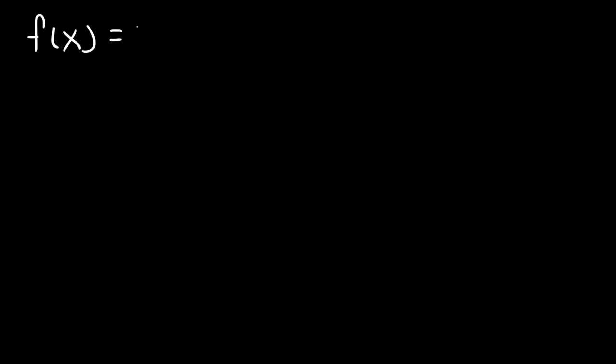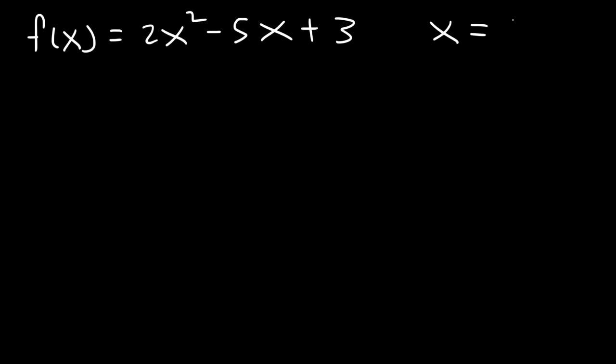In this lesson, we're going to focus on how to find the equation of a tangent line given a point using derivatives. So let's say if we have a function f of x and it's equal to 2x squared minus 5x plus 3, and we wish to find the equation of the tangent line when x is equal to 2.